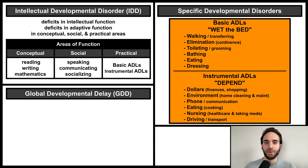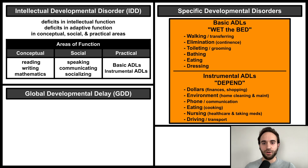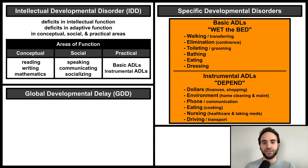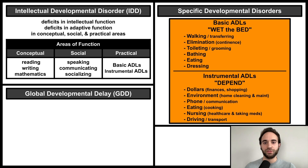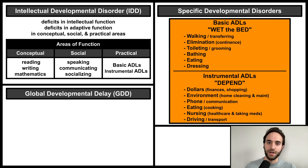Instrumental ADLs can be remembered with the mnemonic 'DEPEND': Dollars, which refers to managing finances and shopping; Environment, which refers to cleaning, performing maintenance on a home, and doing laundry; Being able to use a phone or communicating through other means; Eating, which in this case refers to cooking meals; Nursing, which refers to managing one's health care and taking medications; and Driving, or managing other means of transport.